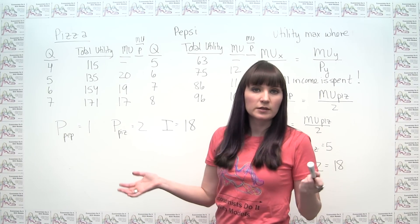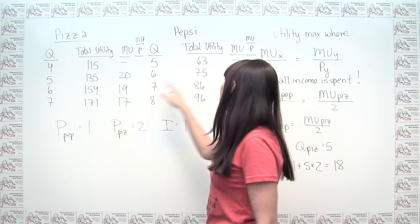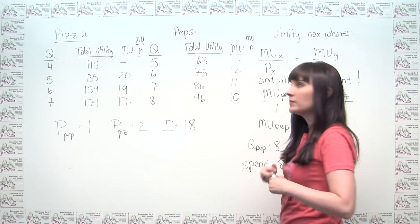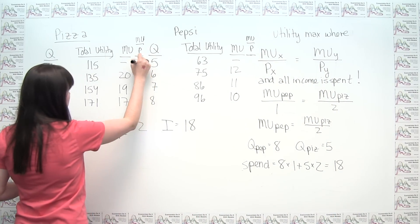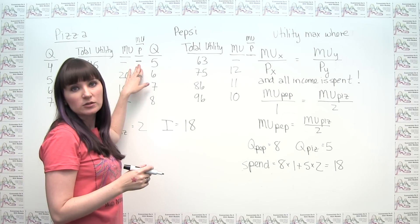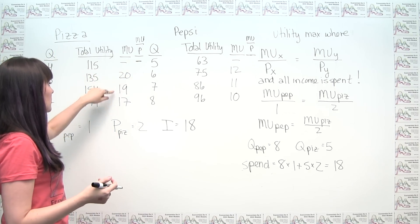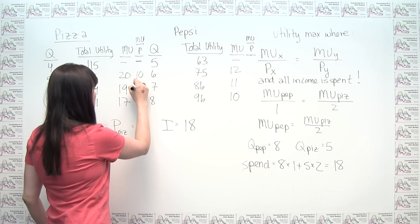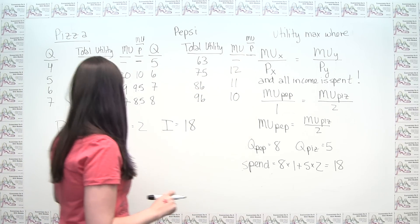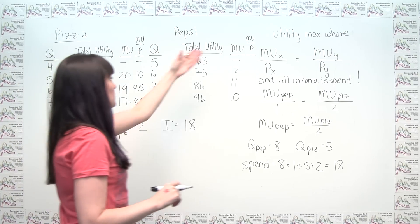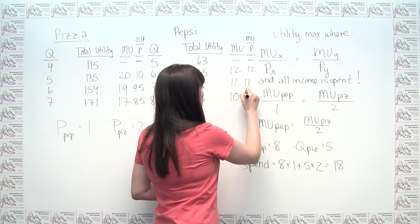There's one other related way to look at this. Since we're comparing the ratio of marginal utility to price for each item, we could calculate MU/price directly at various quantities and work from there. If the price of pizza is 2, we divide all pizza marginal utilities by 2 to get 10, 9.5, and 8.5. For Pepsi, the price is 1, so we're just dividing by 1 — we get the same numbers: 12, 11, and 10.